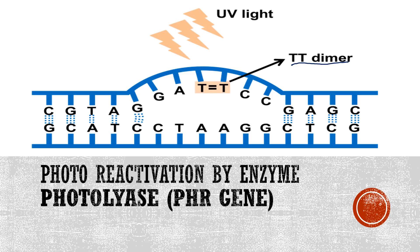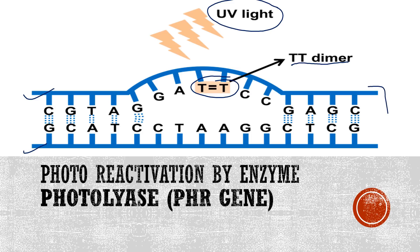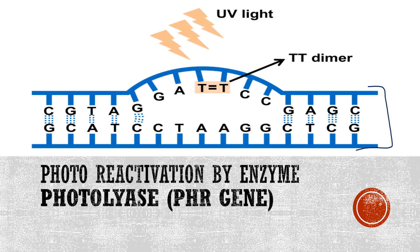The DNA is double-stranded and both strands are paired to each other by hydrogen bonds between the purine and pyrimidine residues. Due to UV light, an unusual pairing happens between the pyrimidines — basically the thymines — that are present on the same strand of the DNA. Normally pairing happens between the adjacent strand, but here due to UV light, pairing is happening on the same DNA strand between two thymine molecules. This is an unusual pairing.